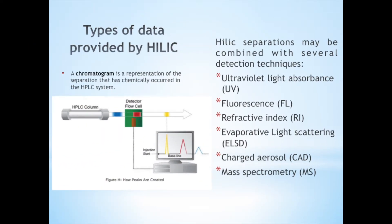A chromatogram is a representation of the separation that has chemically occurred in the HPLC system. A series of peaks rising from a baseline are drawn on a time axis. Each peak represents the detector response for a different compound. The chromatogram is plotted by the computer data station as you can see in figure H. Since sample compound characteristics can be very different, several types of detectors have been developed.